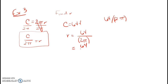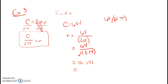We're using pi ≈ 3.14 as an approximation. Plugging in: r = 64 / (2 × 3.14) into the calculator gives approximately 10.191... The problem says to round to the nearest tenth — one decimal place — so our radius is approximately 10.2 feet.